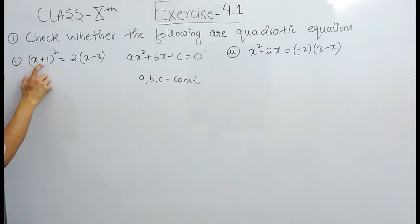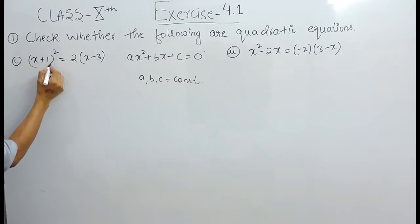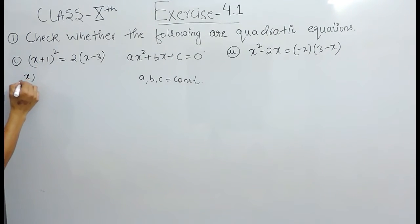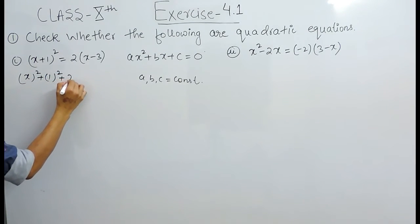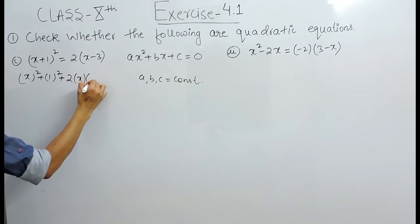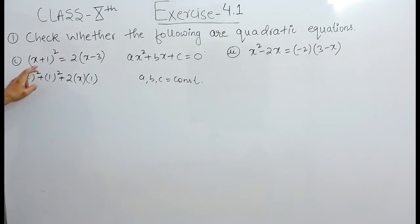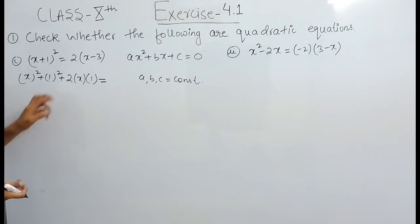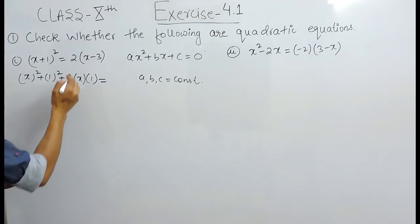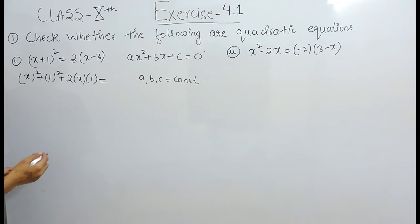This is basically (a + b) whole squared, and we know that (a + b) whole squared is a squared plus b squared plus 2ab. Here a is x and b is 1, so this expands to x squared plus 1 squared plus 2 times x times 1. On the right hand side, when you open the bracket, you have to multiply with both terms.